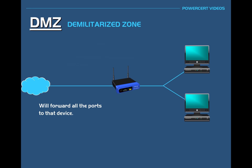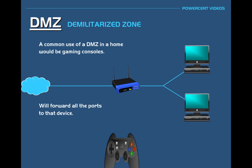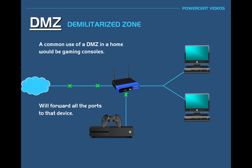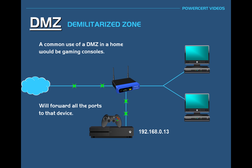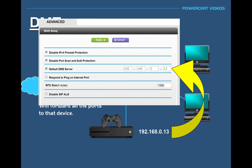A common use of a home router DMZ is to put a gaming console such as an Xbox or a PlayStation and configure it as a DMZ host. This is done because gaming consoles are often used for online gaming, and gamers don't want any interference from a firewall or the hassle of port forwarding configuration. They can simply go into the DMZ settings in the router and enter the gaming console's IP address as the DMZ.